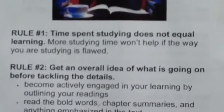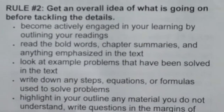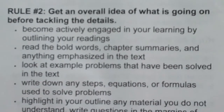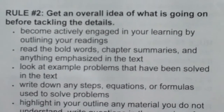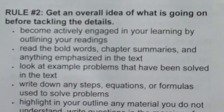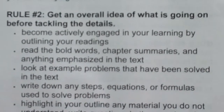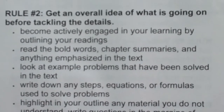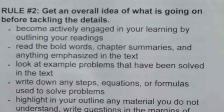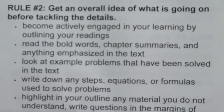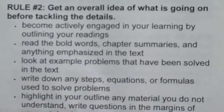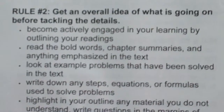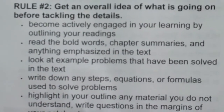The second rule says that the first thing you should do is to get an overall idea of what is going on before tackling the details. What we want to do is look at the chapter and get a kind of roadmap of how the chapter is laid out and what the important information is. We're going to look through the first chapter of the Bio 107 textbook, and I'm going to point out what you need to be paying attention to as you read that chapter.